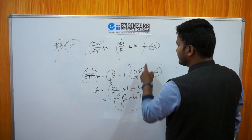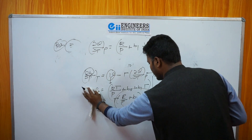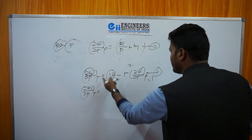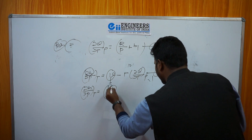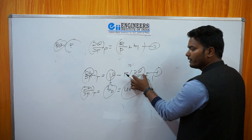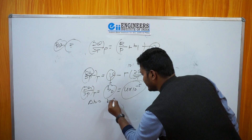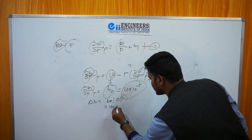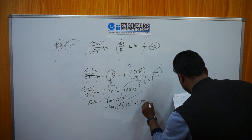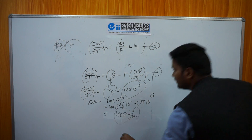Putting all the values into the enthalpy integral: ΔH = V0 × ΔP = (4×10⁻⁵) × (15 − 5)×10⁶. This gives ΔH = 400 J/mol. This is the change in enthalpy for the process.